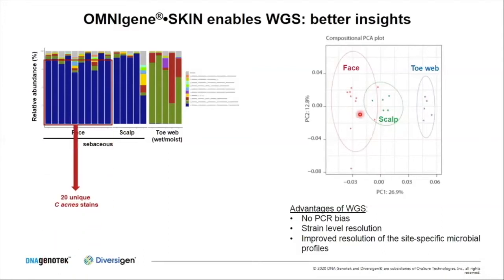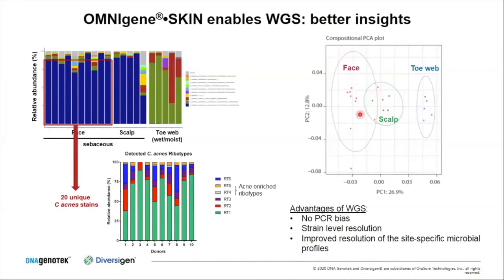Since Propionibacterium is well known to play a role in acne, we looked more closely at our shotgun data. We were able to identify up to 20 unique C. acnes strains in those samples, which we organized based on ribotypes — shared 16S sequences where closely related strains share their 16S sequences. Looking at our 10 donors, they are mostly dominated by ribotypes 1, 2, and 3, which is expected in healthy donors. We were also able to detect ribotypes 4 and 5, which are known to be enriched in acne patients, present at low levels in these healthy individuals.